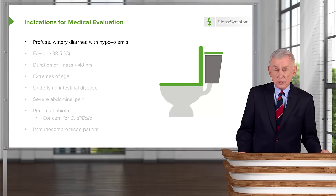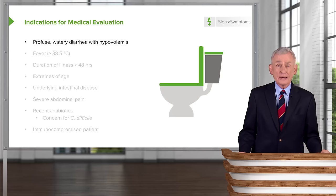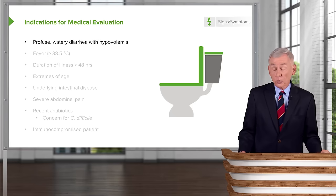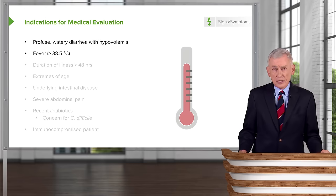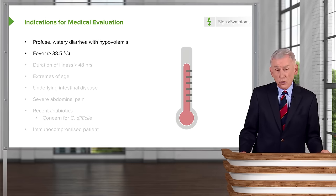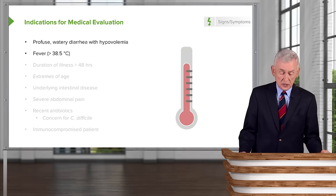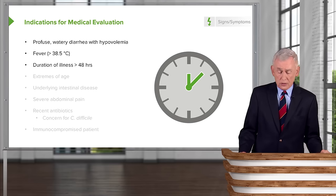That would certainly be for profuse watery diarrhea with hypovolemia — in other words, the patient has such volume depletion that when they stand up, they feel dizzy or feel like they're going to faint. Certainly someone who has diarrhea along with definite fever, say greater than 38.5 Celsius, or if they've had diarrhea lasting more than 48 hours, they probably need to be evaluated.